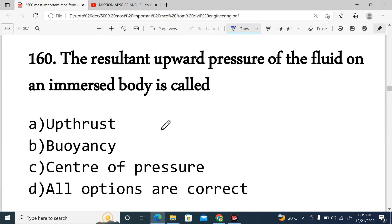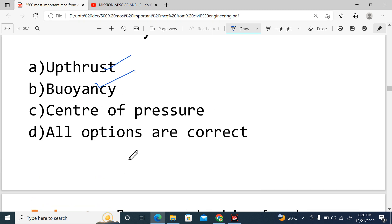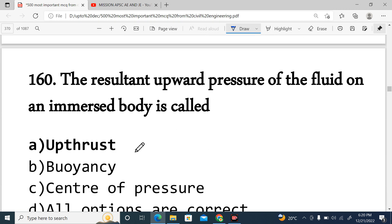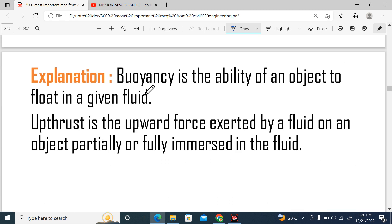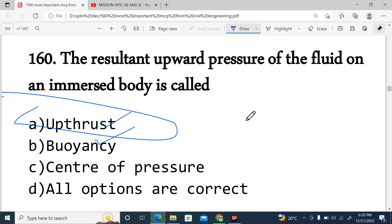Question Number 160: The resulting upward pressure of the fluid on an immersed body is called upthrust or buoyancy. The correct answer is upthrust. Here is the explanation: Buoyancy is the ability of an object to float in a given fluid. Whereas upthrust is the upward force exerted by the fluid on an object partially or fully immersed in the fluid. Buoyancy is a property, but the resulting upward force is upthrust. The answer is upthrust, option A.